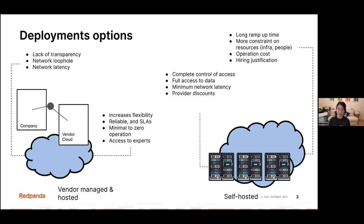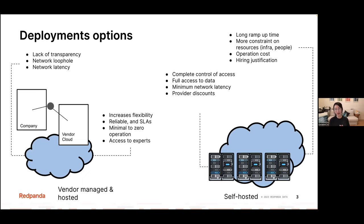The benefit of self-hosted deployment is that you get complete control of access. You control where everything is deployed, how many clusters and brokers, how your data is secured, and the policies applied to your system architecture. And because you know where everything is deployed, you can put everything right next to the workload, so network latency is much less. Also, many companies already have committed spend with cloud providers, so they can take advantage of those promised resources.